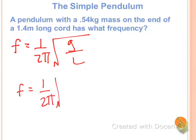Okay, 1 over 2 pi, square root of 9.8 over L, which is 1.4. This one's pretty straightforward to solve for. You're going to solve inside the square root first, then square root it, then take it times 1 over 2 pi, or divide by 2, divide by pi, either way.